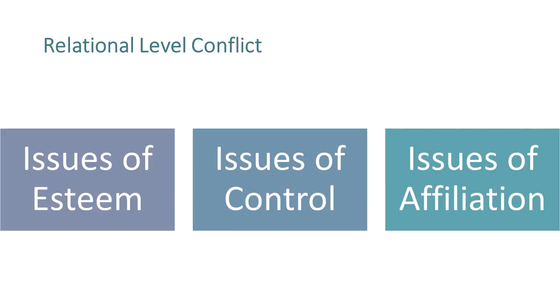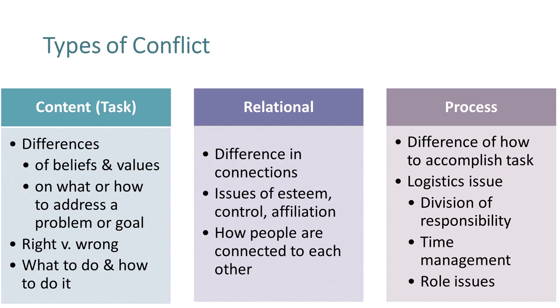Relationship conflict refers to the participants' perceptions of their connection to one another. It might involve issues of esteem, control, or affiliation. This type of conflict involves factors that impact people's ability to maintain positive interpersonal relationships — for instance, personality differences, communication incompetence, etc. These two dimensions are always bound together in human communication and provide a lens for looking at conflict. Content conflict is about an issue of what's right and wrong or where we are going. Relationship conflict is about how people are connected to each other.